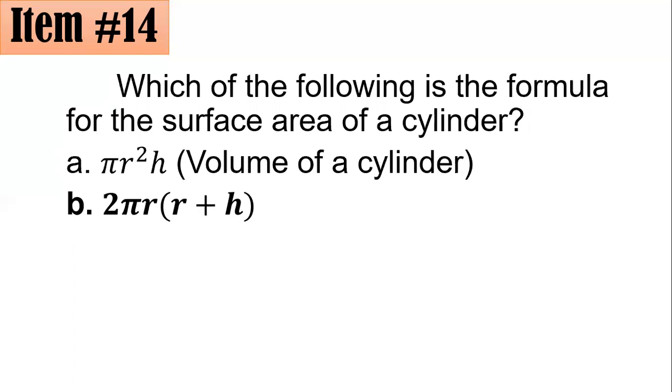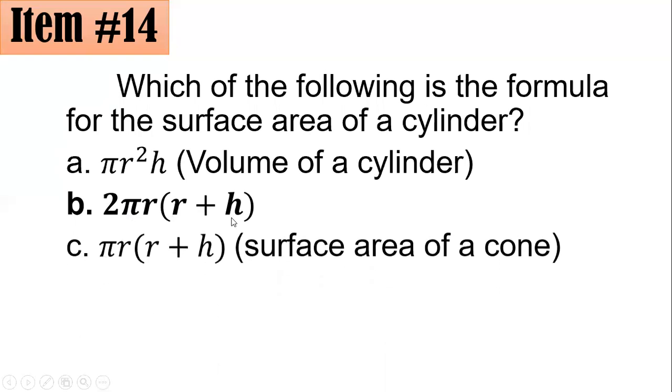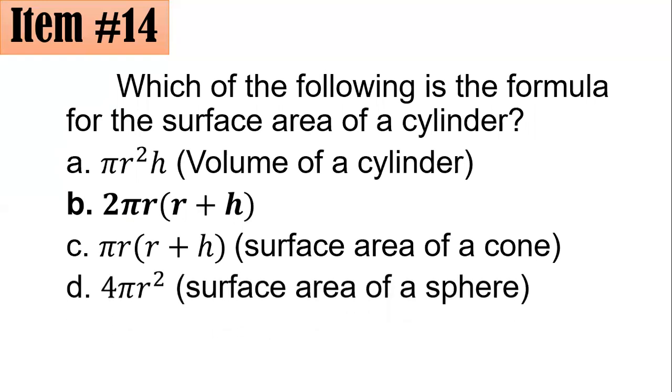So to make it simple, the surface area of a cylinder is simply 2 pi R here. It's the circumference times the sum of the radius and the height. Letter C is the formula for the surface area of a cone. Note that it's quite similar to B, it's just that there's no 2 here. Because the formula for the surface area of a cone, the surface area of a cone is half the surface area of a cylinder. And 4 pi R squared is the formula for the surface area of a sphere. Letter D.